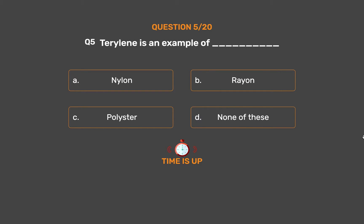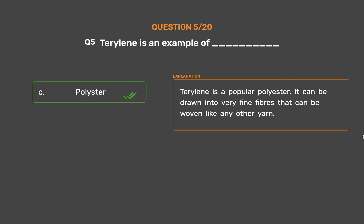The correct answer is Option C: Polyester. Terraline is a popular polyester. It can be drawn into very fine fibers that can be woven like any other yarn.